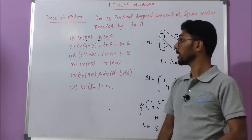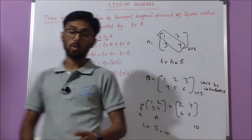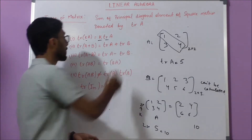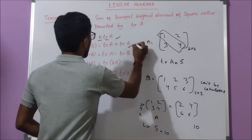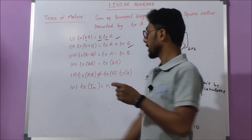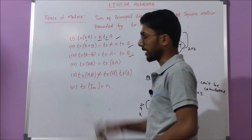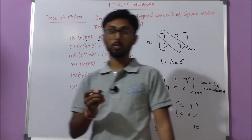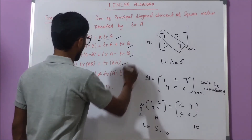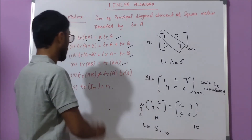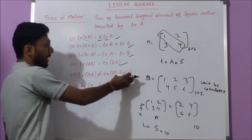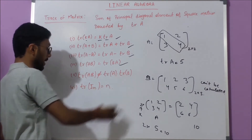Similarly, tr(A+B) = tr(A) + tr(B), and tr(A−B) = tr(A) − tr(B). Also, tr(AB) = tr(BA). Importantly, tr(AB) is not equal to tr(A) multiplied by tr(B).